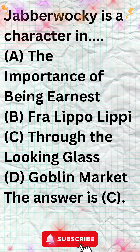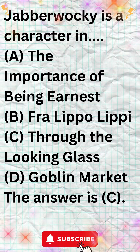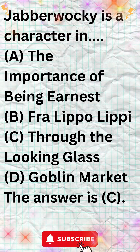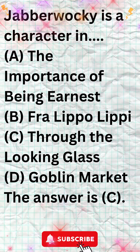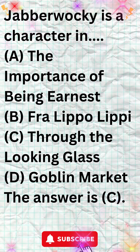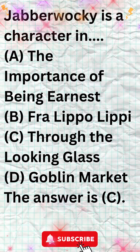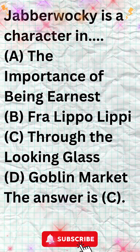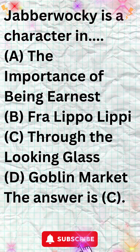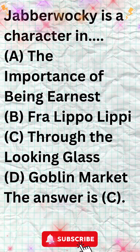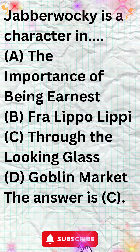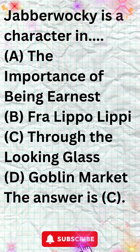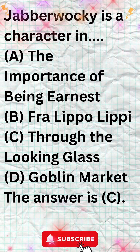The other answer choices are all plays by Oscar Wilde. A. The Importance of Being Earnest is a comedy of manners about two young men who adopt different personas in order to pursue their romantic interests. B. Fra Lippo Lippi is a dramatic monologue about a Renaissance painter who is arrested for drunkenness. D. Goblin Market is a poem about two sisters who are tempted by goblins to eat goblin fruit. Therefore, the only answer choice that features Jabberwocky as a character is C.